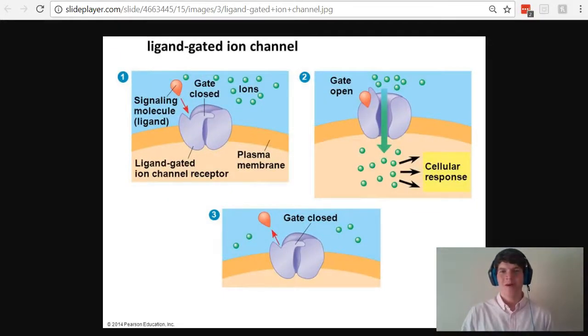Membrane receptors are receptors located on the membrane of a cell. When I think of examples of membrane receptors, I think of ligand-gated ion channels and GPCRs, G-protein coupled receptors.